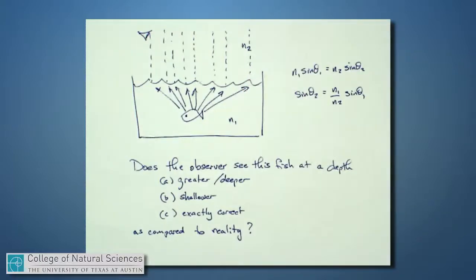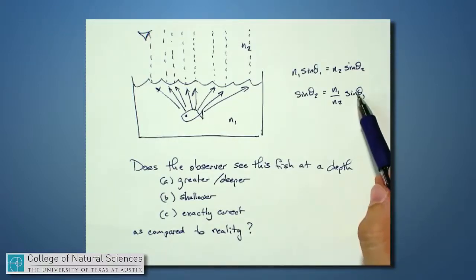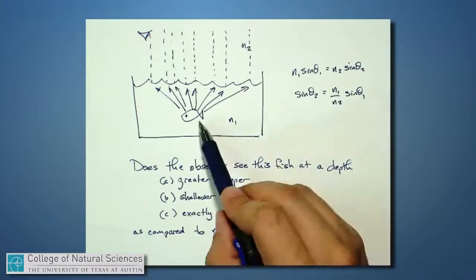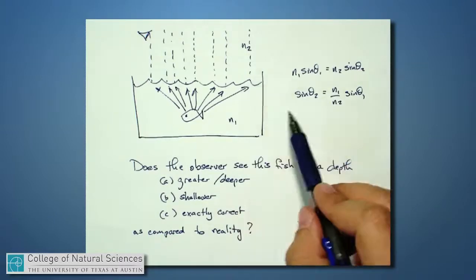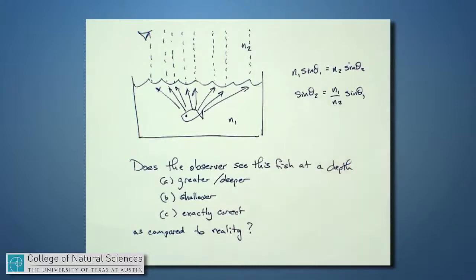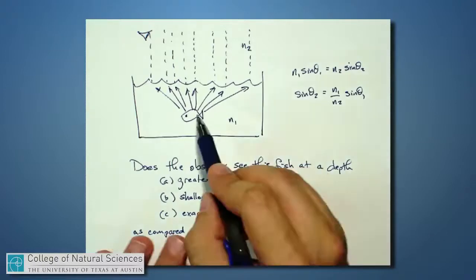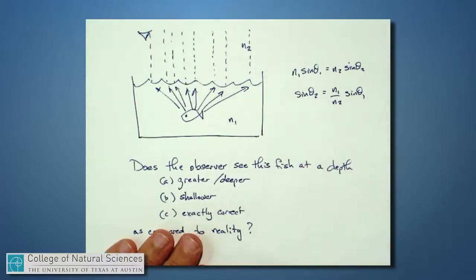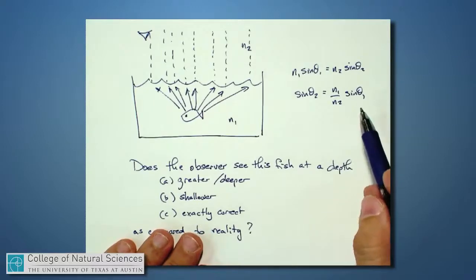If this is water and this is air, then this ratio n₁/n₂ is a number that's bigger than one. What does that mean? It means that every time I have a certain angle entering this boundary right here, the angle leaving has to be even bigger because this ratio n₁/n₂ is bigger than one. For the light that's traveling straight up, θ₁ is zero, so sine of that angle is zero, and the light keeps on going just as it was, unperturbed.